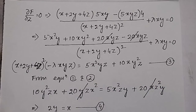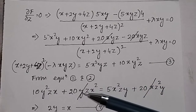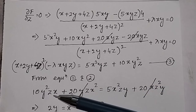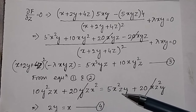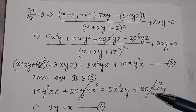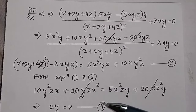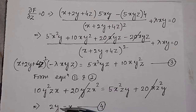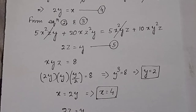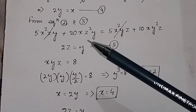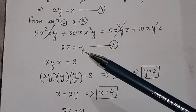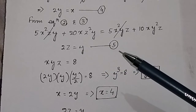From equations 1 and 2, we get: 10y squared z times x plus 20yz times x squared equals 5x squared times 2y plus 20xz squared times y, which simplifies to 2y equals x — this is equation 4. Similarly, solving equations 2 and 3 gives 2z equals y — equation 5.